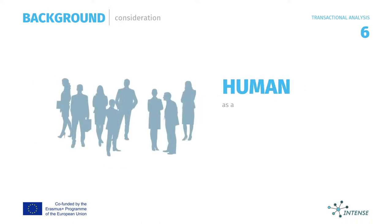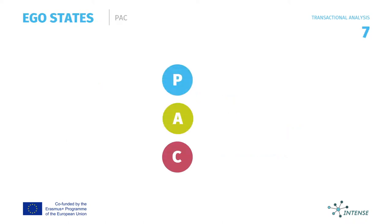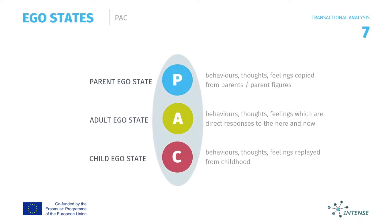Given all these backgrounds, plus the consideration that a human is born as a biological being and a being of reason and moral, Berne developed three ego states. He understood that there exist three distinct states in all people. People change from one state to another in the course of their interactions.